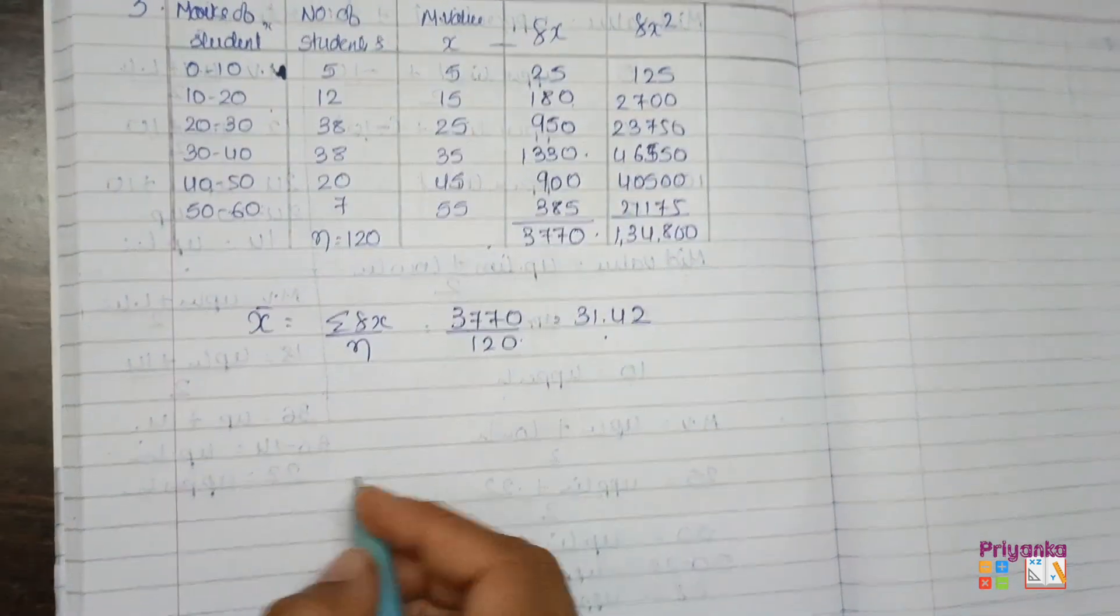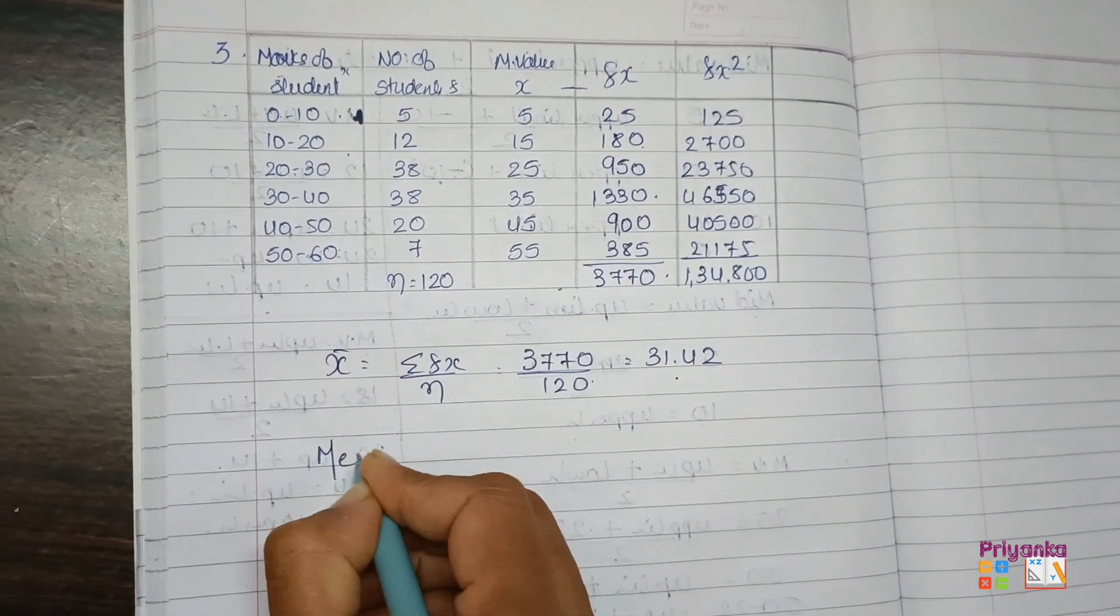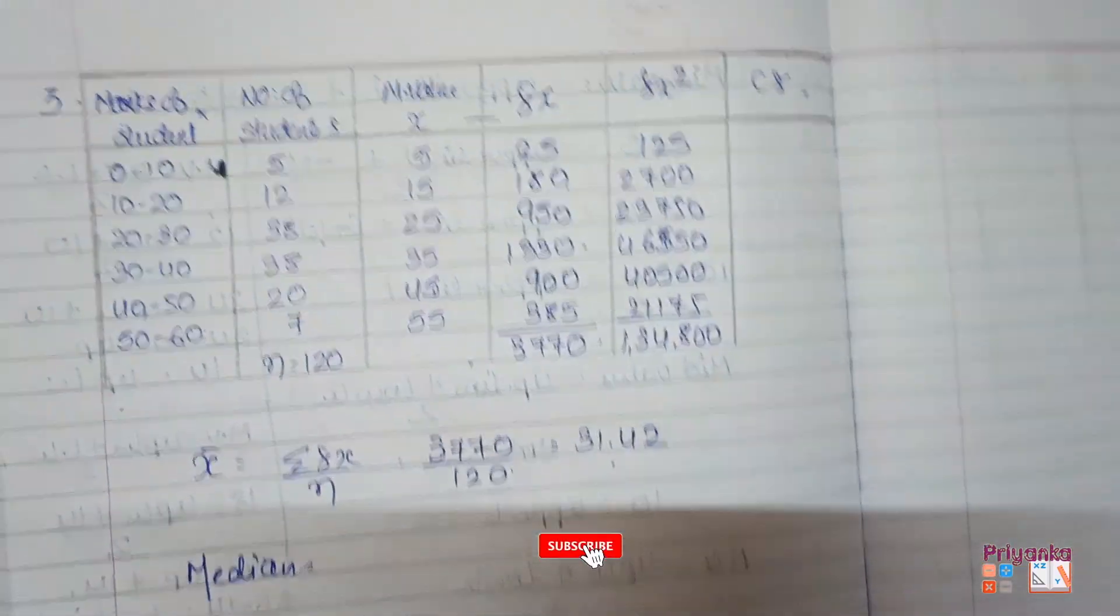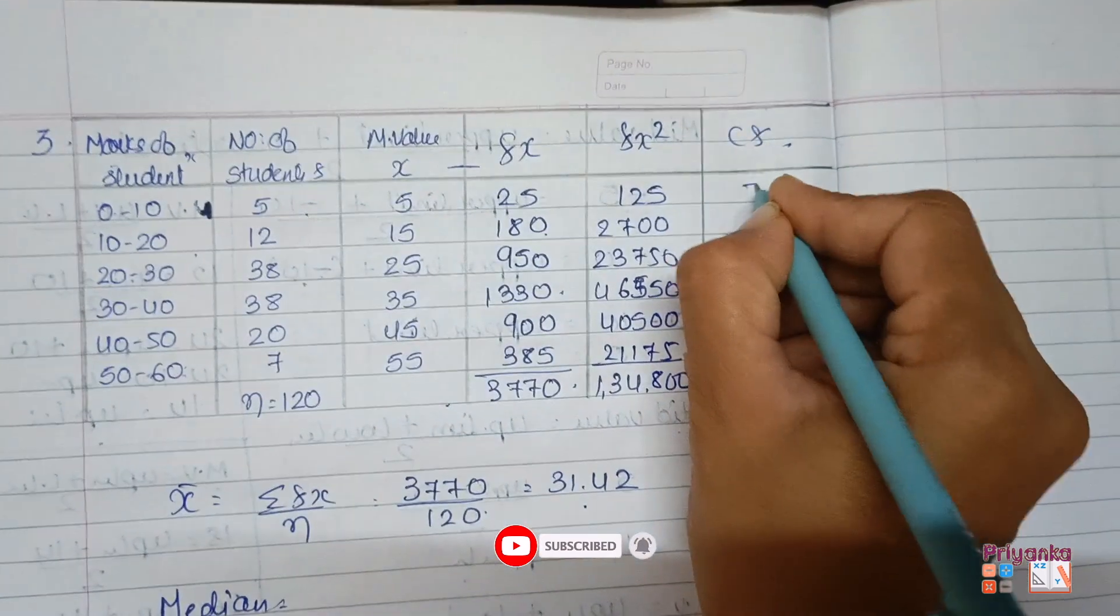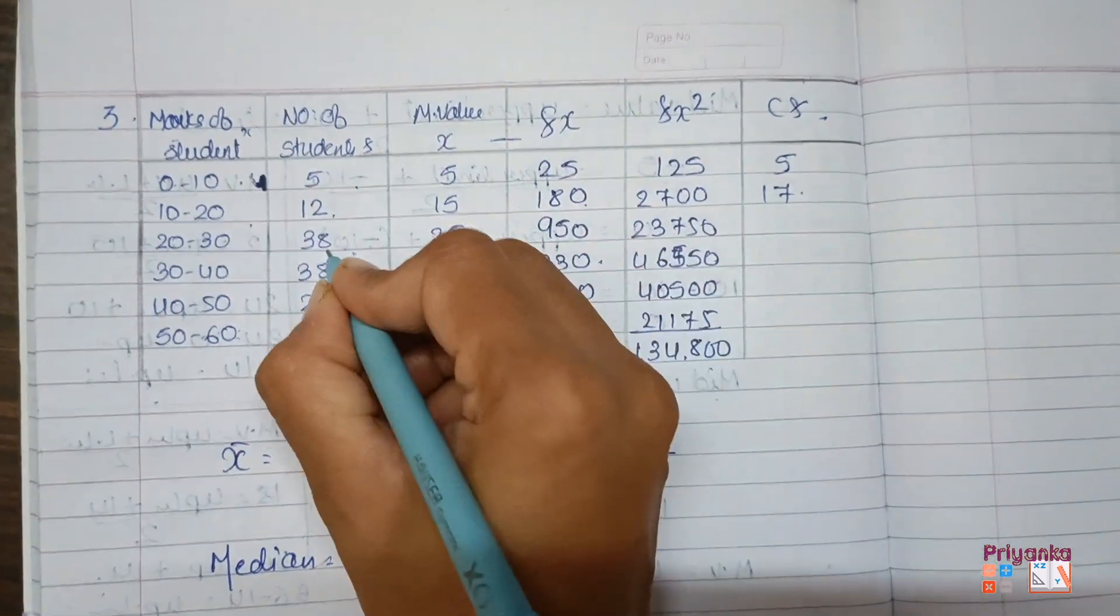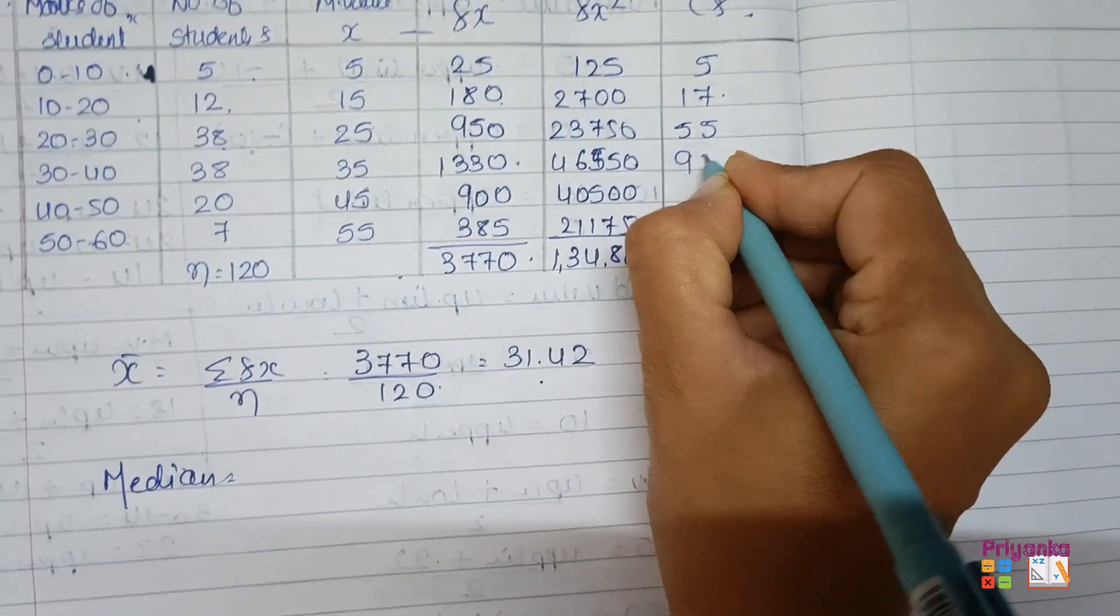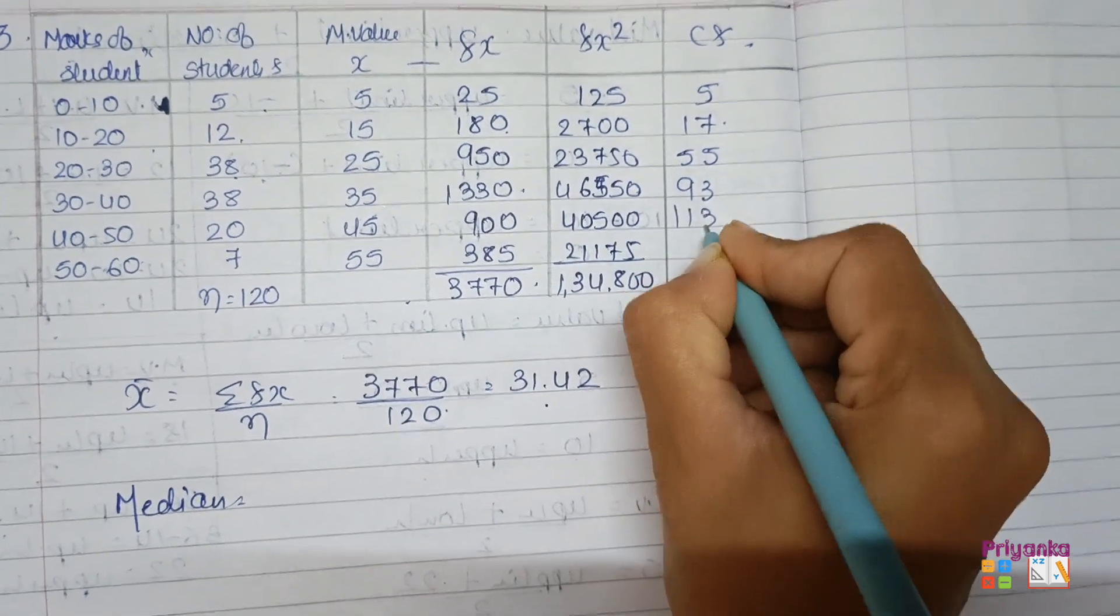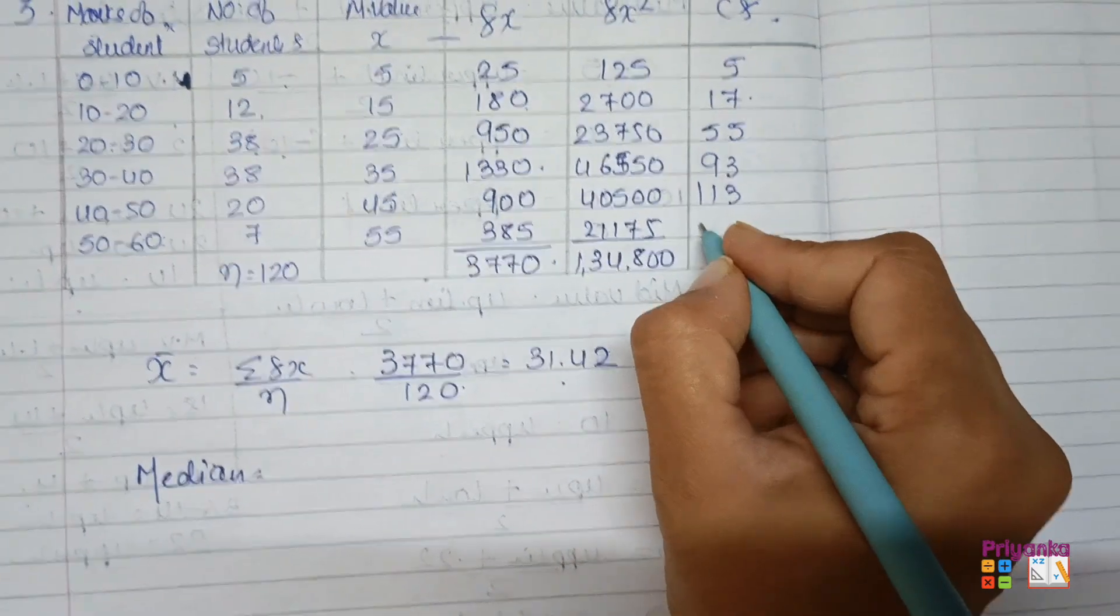Now next what we find out is median. First let's find out the median. What we need is cumulative frequency. Where we will take 5 first from the frequency, 5 plus 12, 17 plus 38, 55 plus 38, 93 plus 20, 113 plus 7 that is 120.